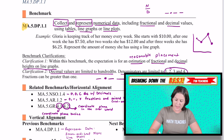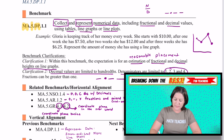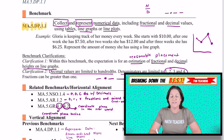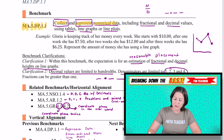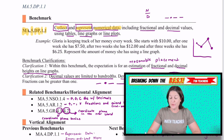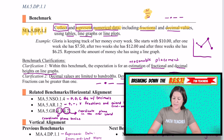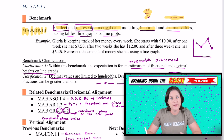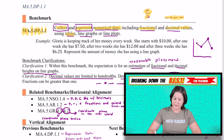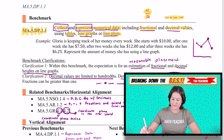Today's standard is MA.5.DP — that stands for Data Analysis and Probability — 1.1. This standard says to collect and represent numerical data, that means data with numbers, including fractional and decimal values, because fractions and decimals are both numbers, using tables, line graphs, and line plots.